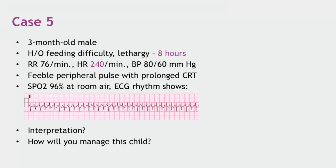In sinus tachycardia, there is usually an etiological cause such as fever or signs of dehydration. In PSVT, the child was absolutely fine the day before and suddenly becomes fussy and irritable with sudden onset tachycardia. This abrupt history is the key clinical differentiator.